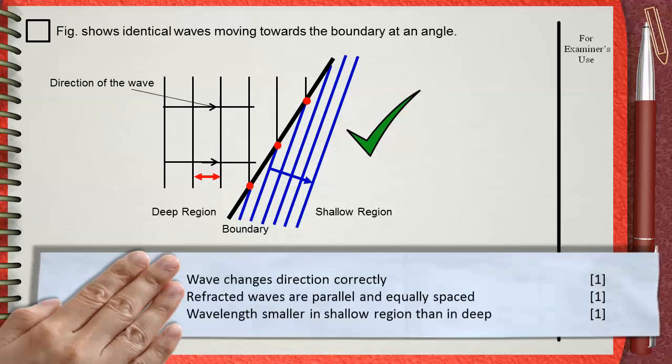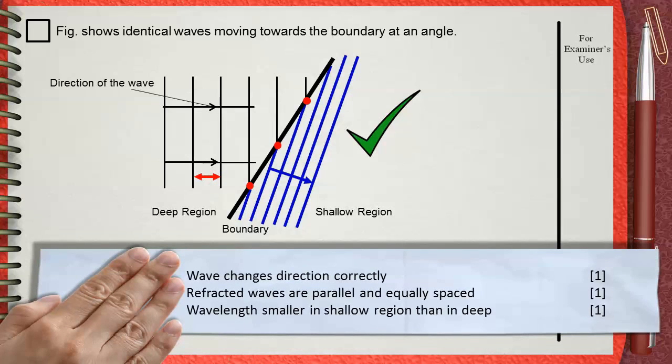Three marks are given by the mark scheme for wave changes direction correctly. This is one mark. Refracted waves are parallel and equally spaced. This is the second mark. The third mark is for wavelength must be smaller in shallow region than in deep region.